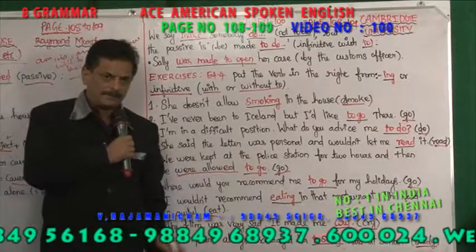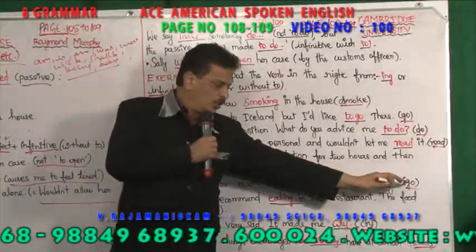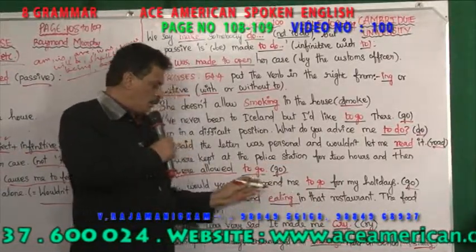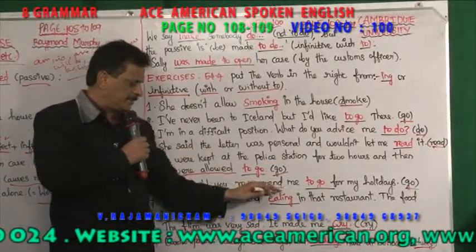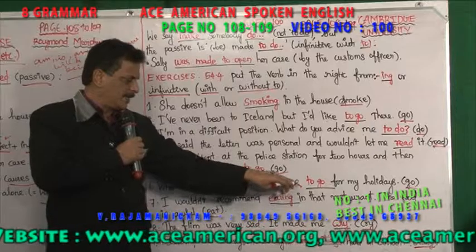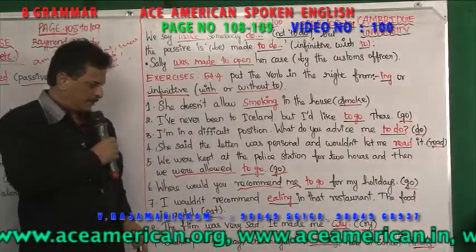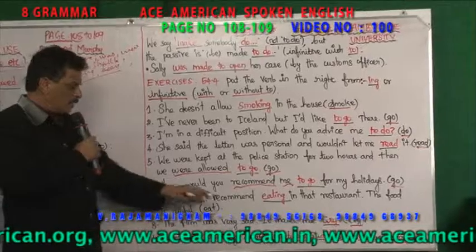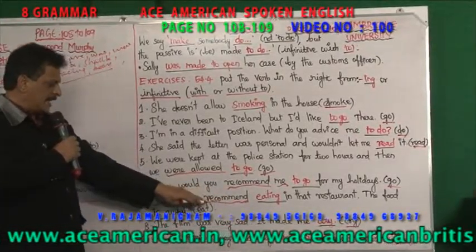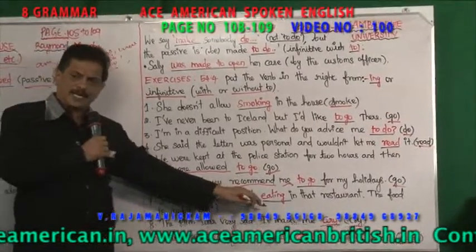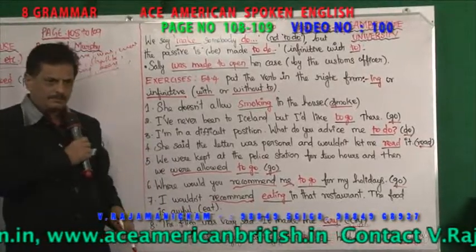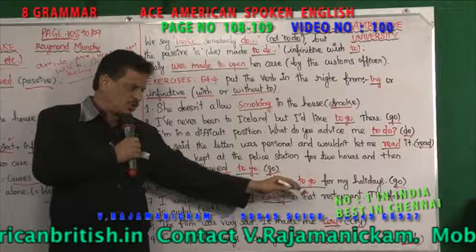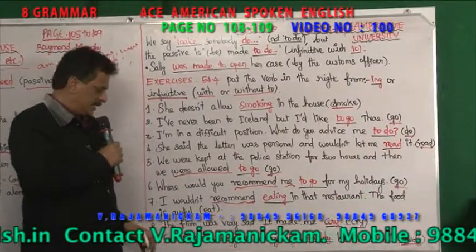'Where would you recommend me to go for my holidays?' After the verb 'recommend' with an object, you use the infinitive 'to go'. 'I wouldn't recommend eating in that restaurant' — here 'recommend' has no object, so you use the gerund 'eating'. The food is awful — awful means very bad.